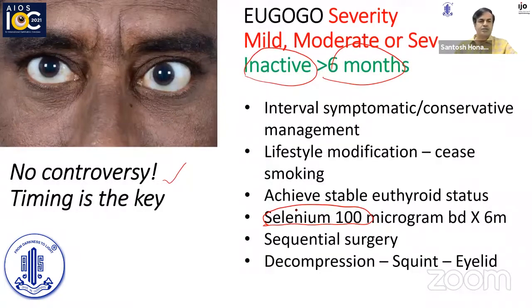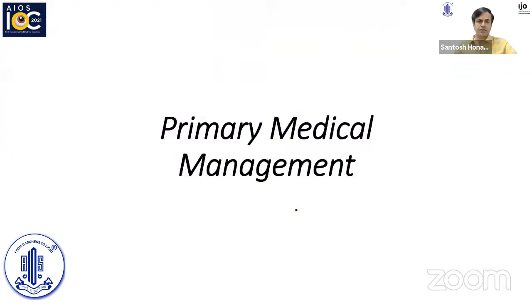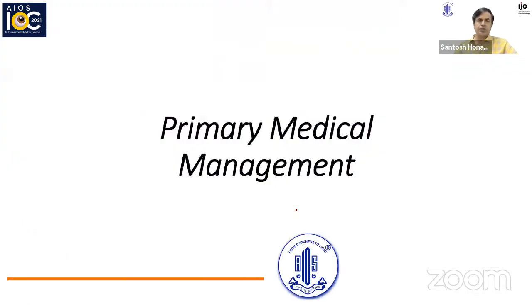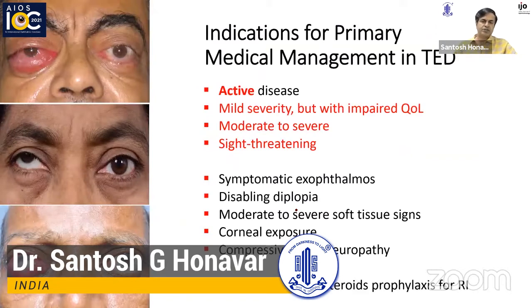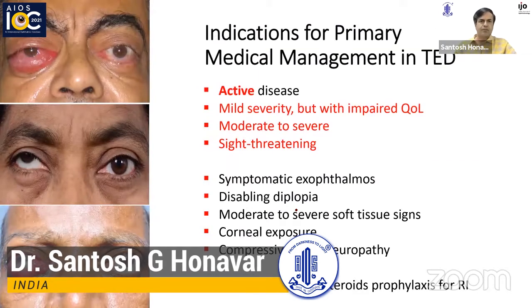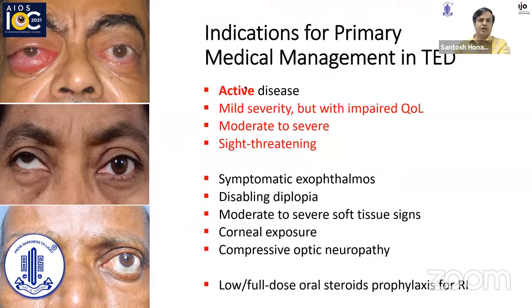100 micrograms of selenium twice a day for 6 months is the dose that is given. Then, of course, you perform sequential surgery: decompression, squint surgery, and eyelid. Primary medical management is specifically for patients who have active disease, mild severity, but have active disease with impaired quality of life. These can be chosen for medical management.